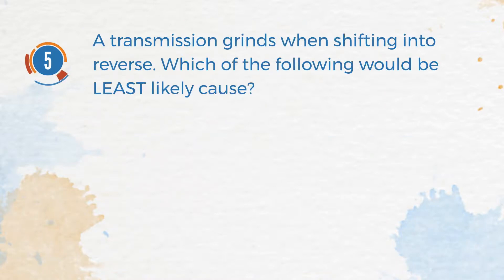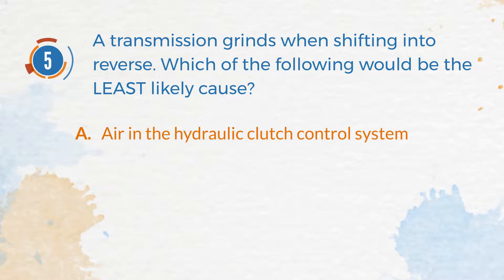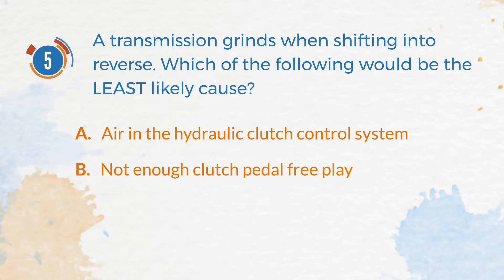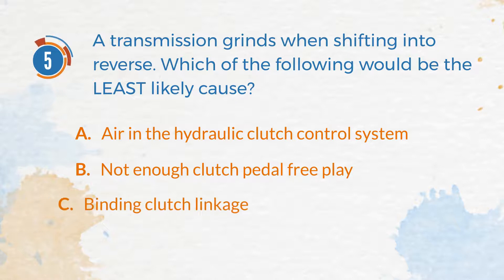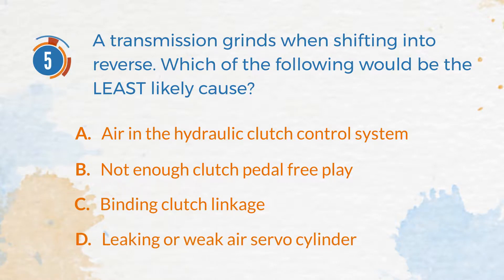Number 5. A transmission grinds when shifting into reverse. Which of the following would be the least likely cause? A. Air in the hydraulic clutch control system. B. Not enough clutch pedal free play. C. Binding clutch linkage. D. Leaking or weak air servo cylinder.